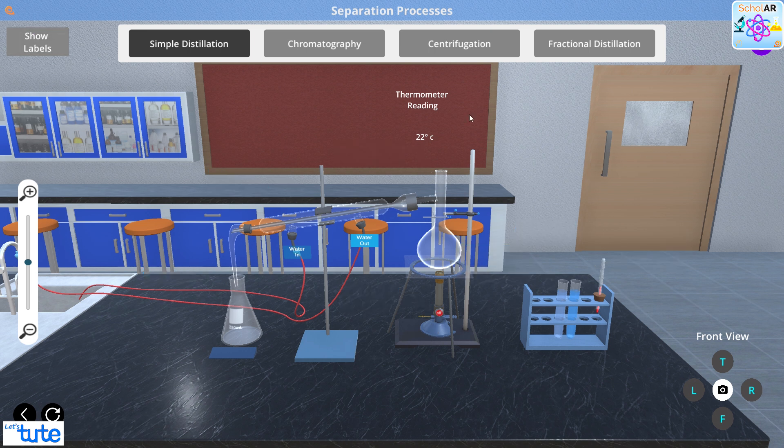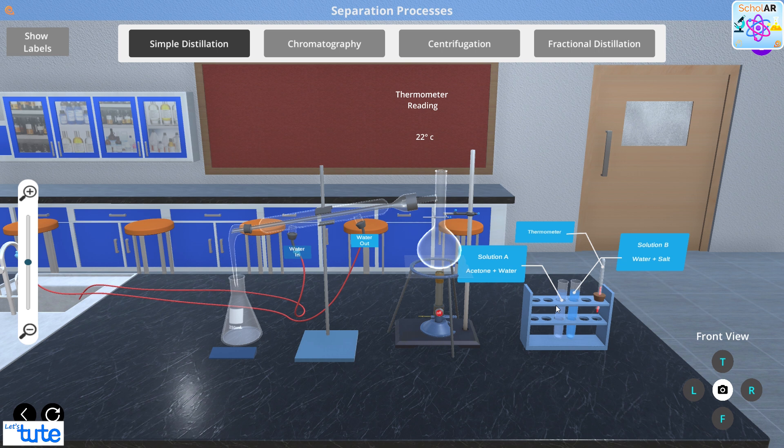Let's start the process. We need to first pour the liquid into the distillation flask. Let's start with solution A, which is acetone and water.